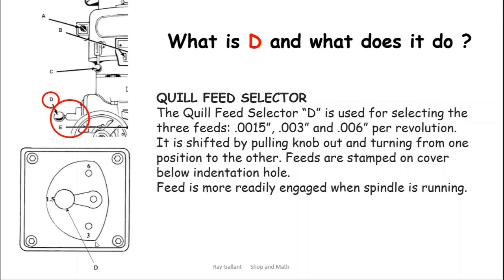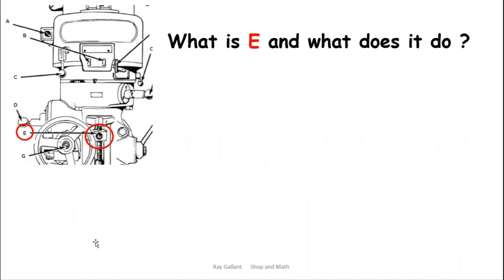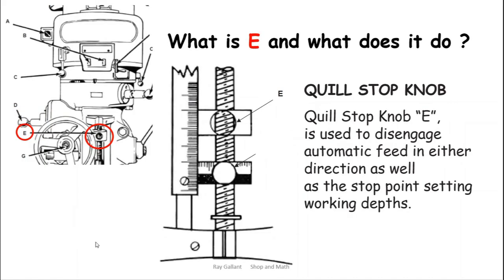E is your quill stop knob. Basically when your quill comes down and hits something using the quill stop, it'll kick the quill stop out and it also is a bit of a depth range.